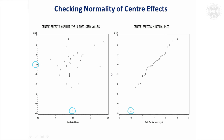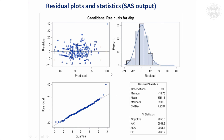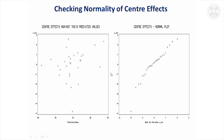We'd want to investigate that centre to see if there's anything odd about it — whether it could be excluded, or if not, try analysing the data excluding it and comparing the results to keeping it in. When I did look at this, taking out just that one observation made a big difference to the results, so it was quite important to check the model assumptions. The centre didn't affect the treatment effect results too much, though it did make a big difference to the variance components.